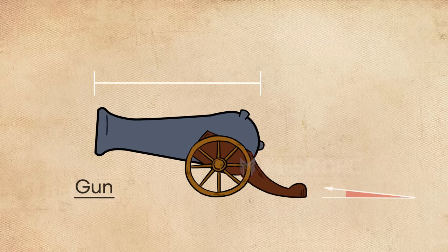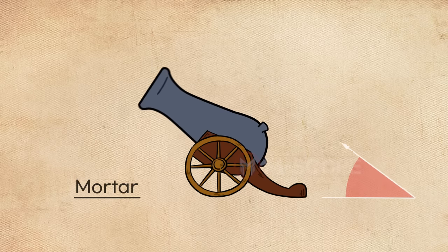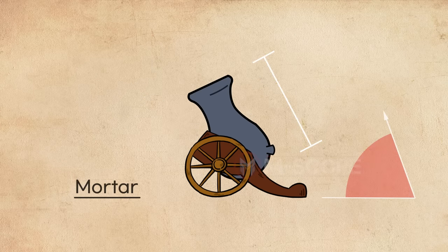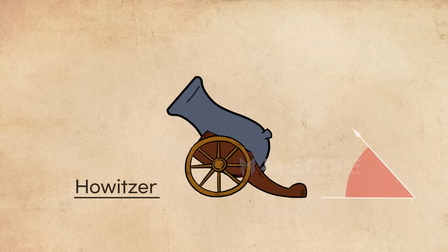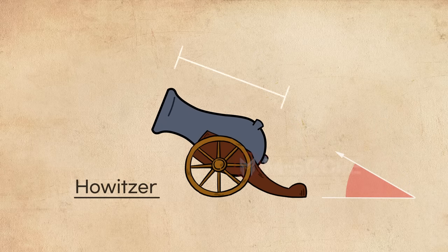A gun is long barreled and fires at low angle. A mortar is short barreled and fires at high angle. A howitzer has a relatively shorter barrel than a gun and fires at mid-angle within the angle range of a gun and a mortar.